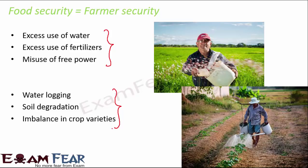There is also an imbalance in crop varieties, because big farmers control the market and market prices, so they tend to grow only the more valuable crops. As a result, some crops are grown all the time while others are never grown. To truly ensure food security for everyone, all farmers must be given equal opportunity and equal access to all resources, so that they can all get similar output and lead a better life.